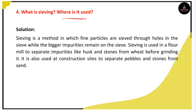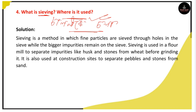Next question: What is sieving and where is it used? Sieving is a method in which fine particles pass through holes in a sieve while the bigger impurities remain on the sieve. It is used to separate impurities like husk and stones from wheat while grinding it.